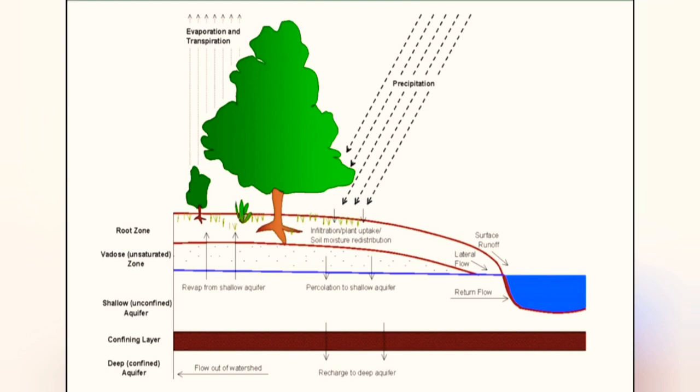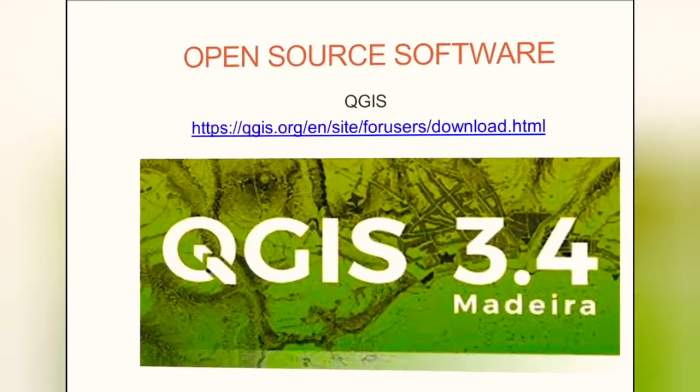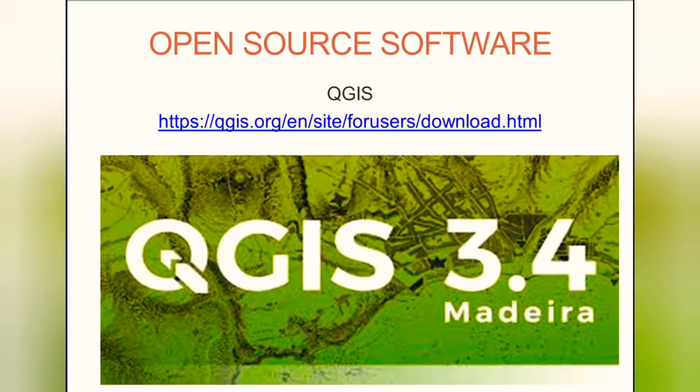SWAT uses the key principles or parameters of hydrology, which include precipitation, evaporation, and transpiration.